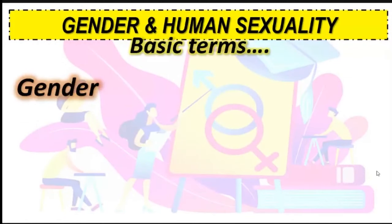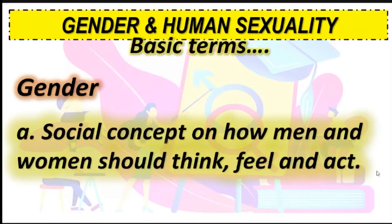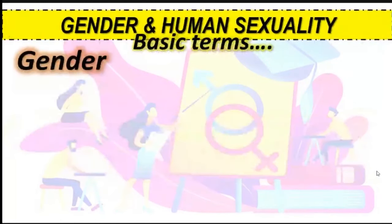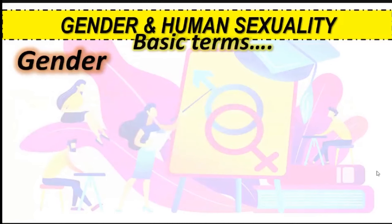The next basic term is gender. Gender is a social concept on how men and women should think, feel, and act. Sex is different from gender — sex refers to biological characteristics, while gender refers to what a male or female feels. Gender is associated with being male, female, or intersex.